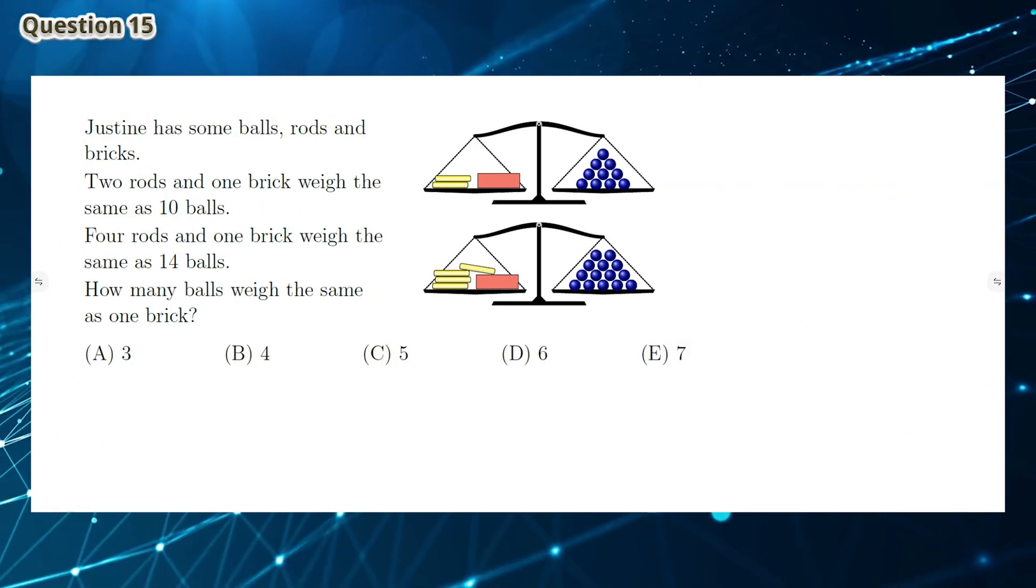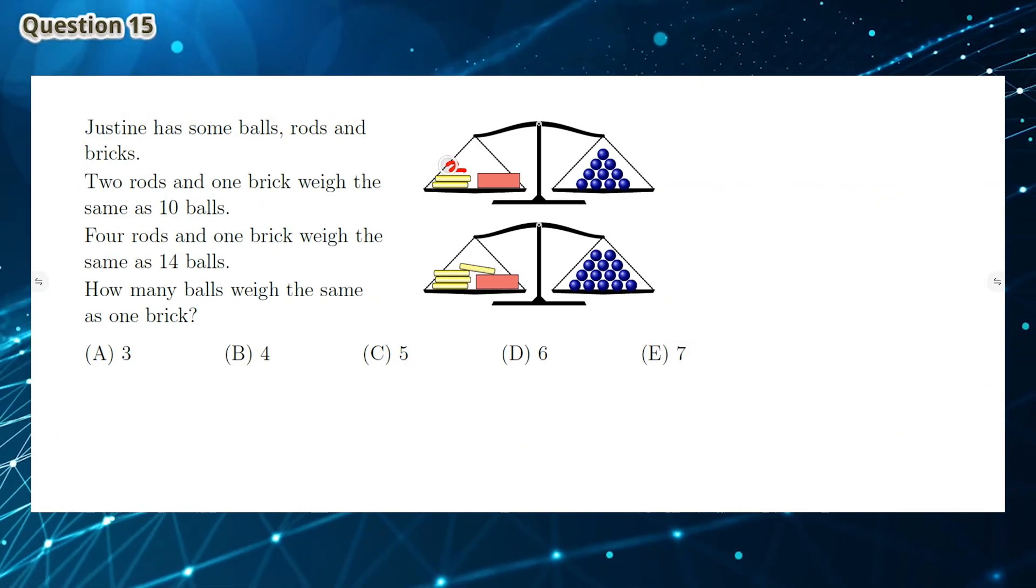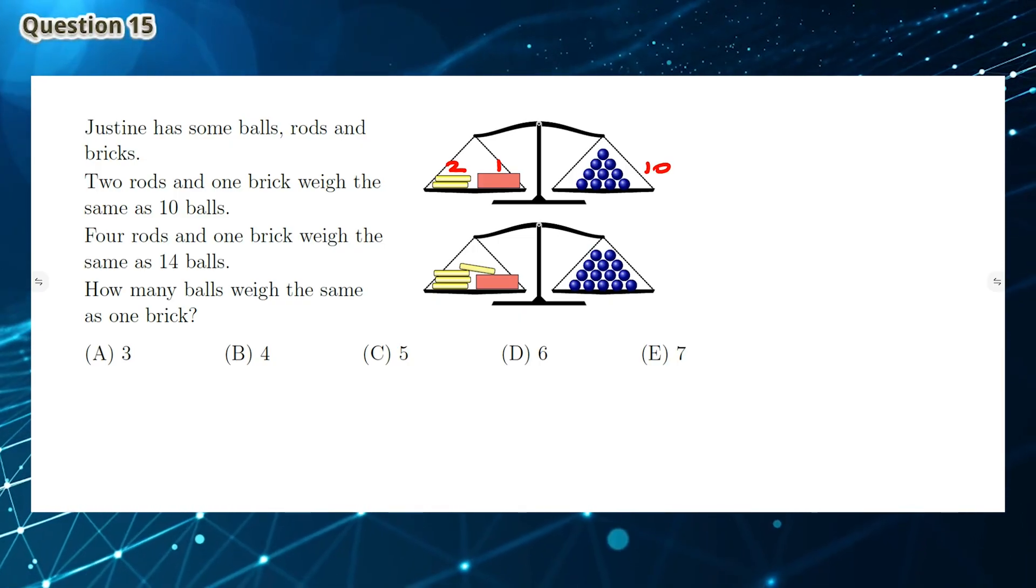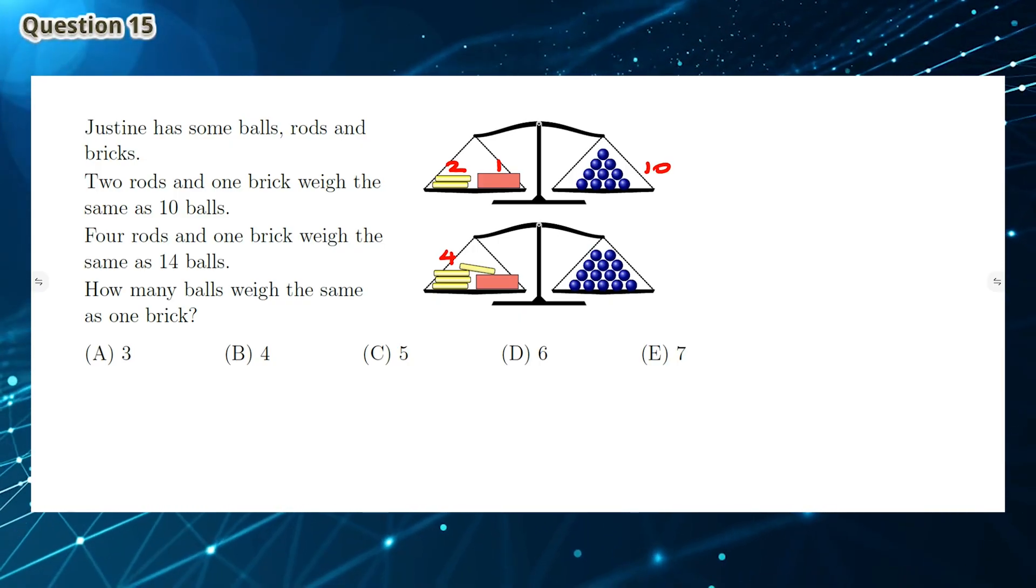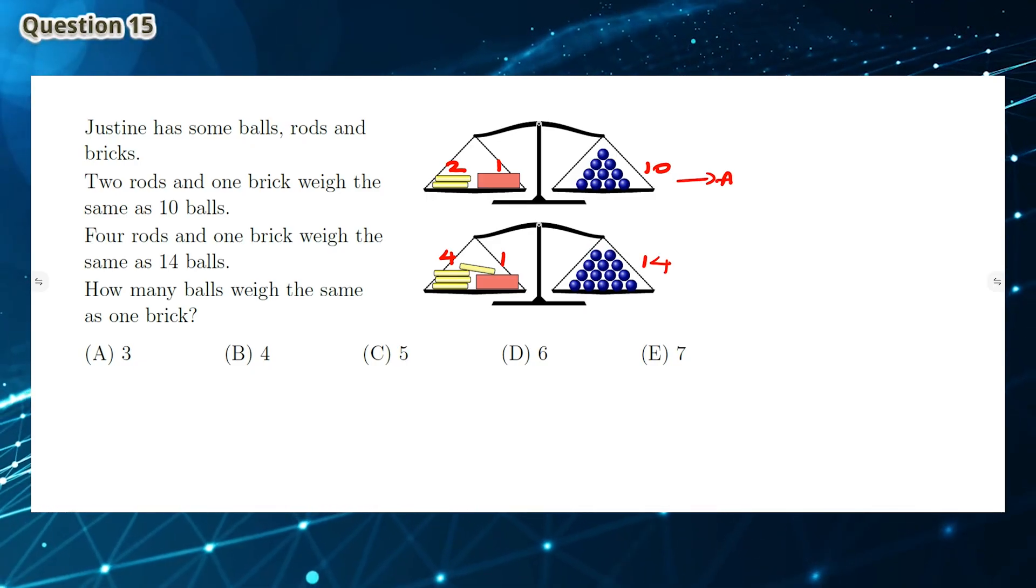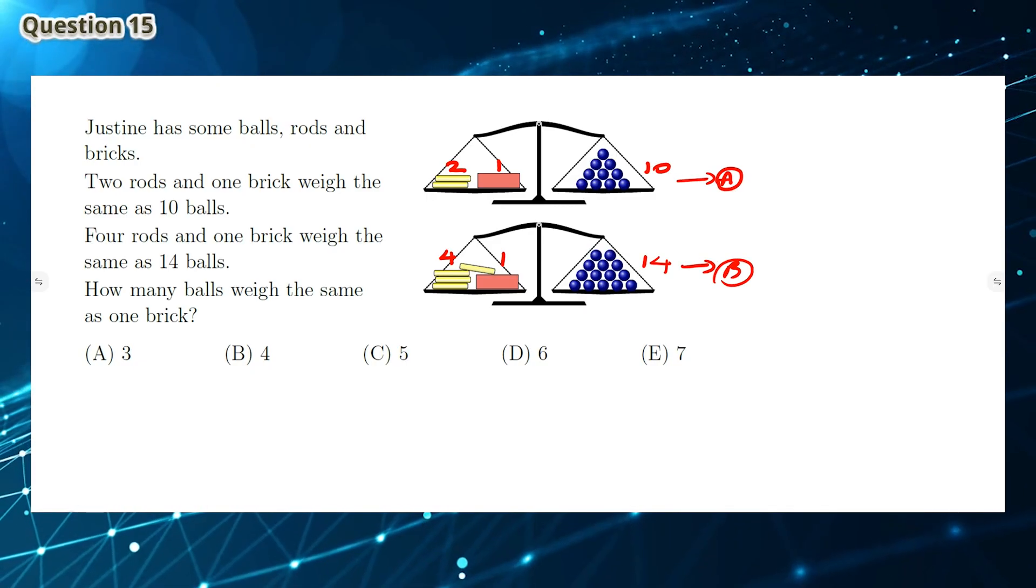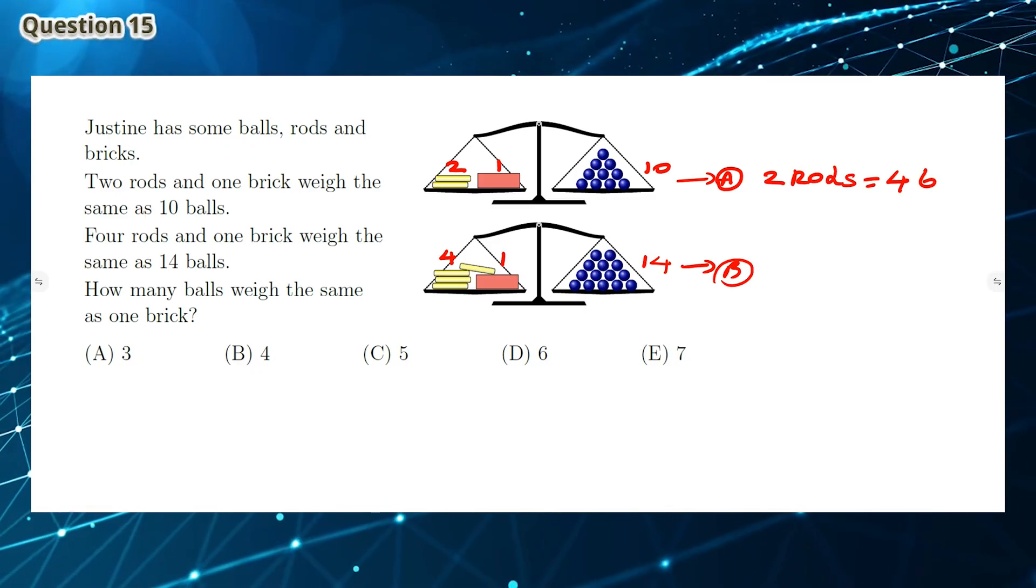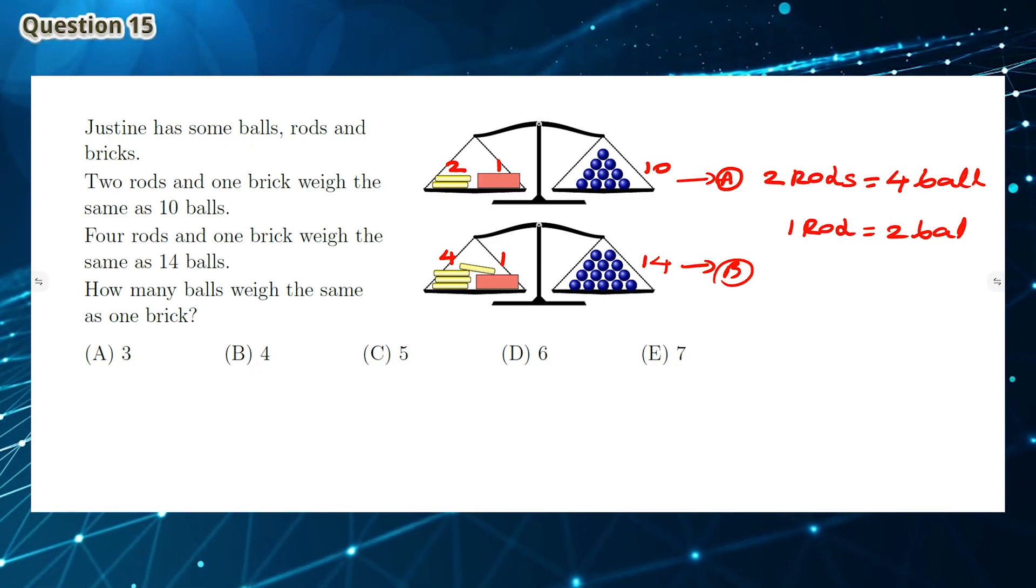Question 15: If you look at the first scale measuring, 2 rods and 1 brick give 10 balls. And in the second, 4 rods and 1 brick give 14 balls. The extra 2 rods create an extra weight of 4 balls. This extra 2 rods add the weight of 4 balls, so 1 rod is 2 balls.